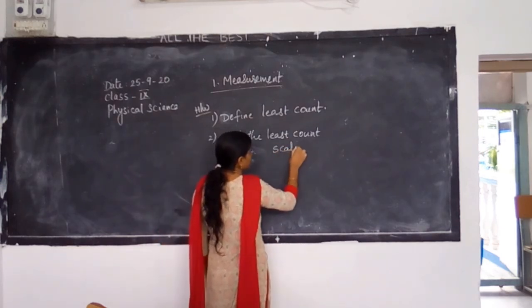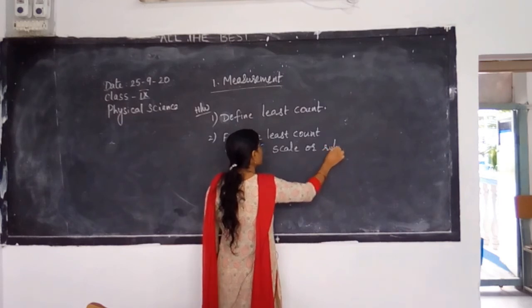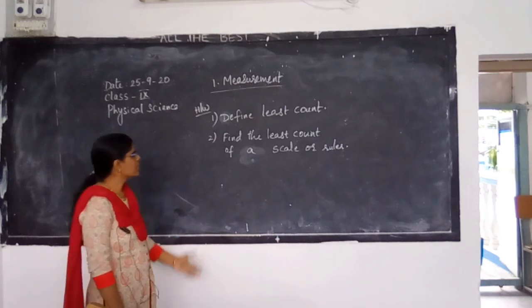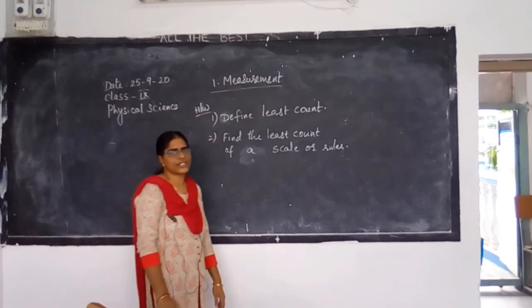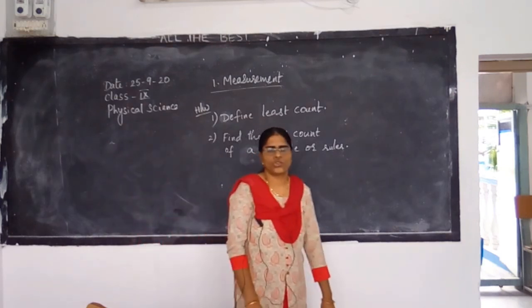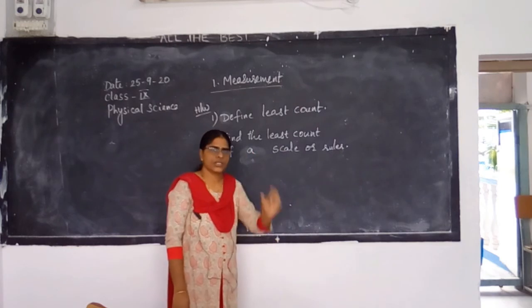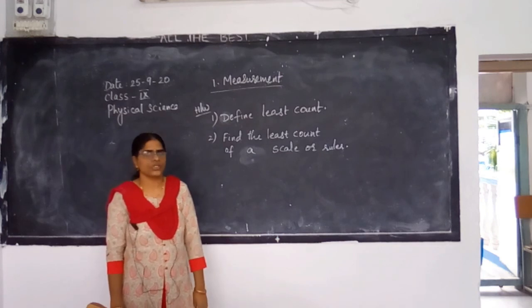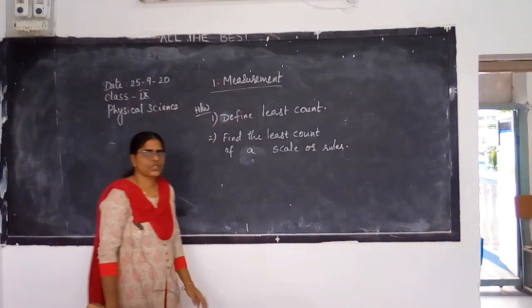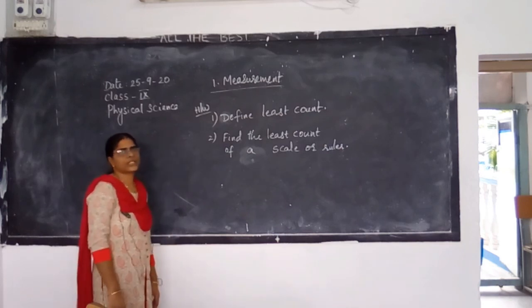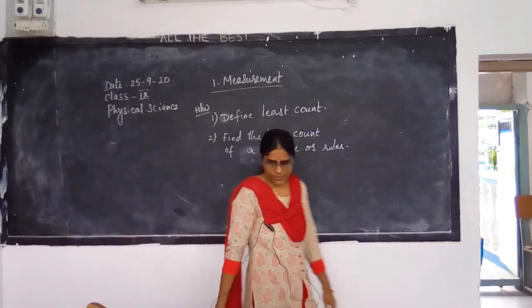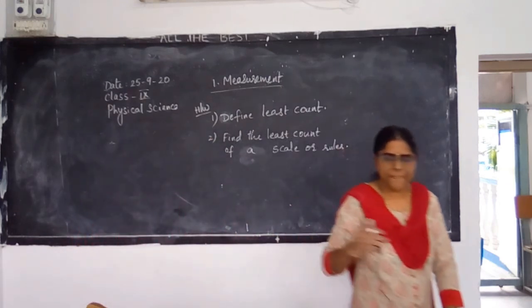Similarly, you can find the diameter of a sphere by placing it between the two jaws of the vernier calipers and using the same formula: MSR plus vernier coincidence into LC (least count). When you come to school, you can do these lab activities.